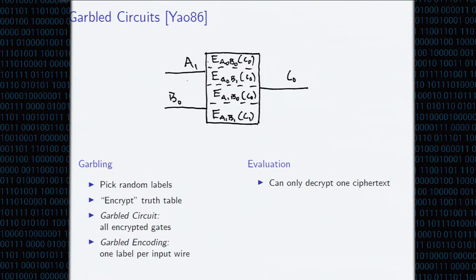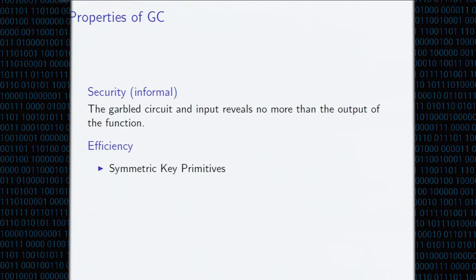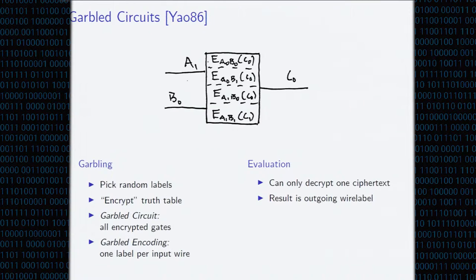And how do we evaluate a garbled circuit? It's pretty straightforward. We have our garbled encoding, we have exactly one label per wire. This will allow us to decrypt exactly one row of the truth table, which will give us the outgoing wire label. And it's easy to see how this will compose so we can do entire circuits.